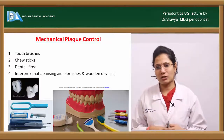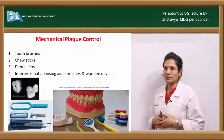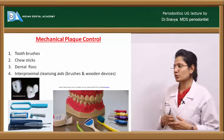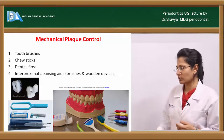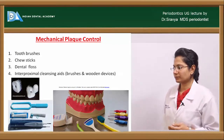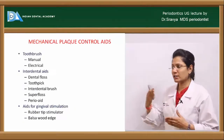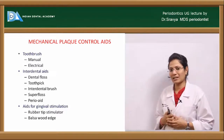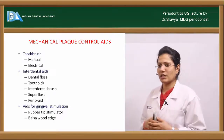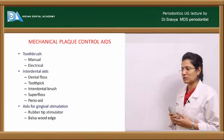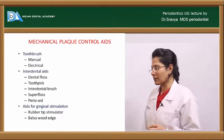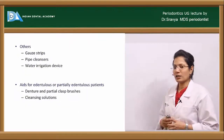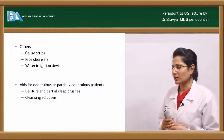Let us classify plaque control agents. You can classify them into mechanical plaque control and chemical plaque control. Mechanical plaque control includes toothbrushes, chew sticks, dental floss, and interdental or interproximal cleaning aids. Further sub-classification includes manual and electric toothbrushes; interdental aids such as dental floss, toothpicks, interdental brushes, super floss, and perio aid; stimulation aids including rubber tip stimulator and balsa wood edge; and others like gauze strips, pipe cleaners, and water irrigation devices.